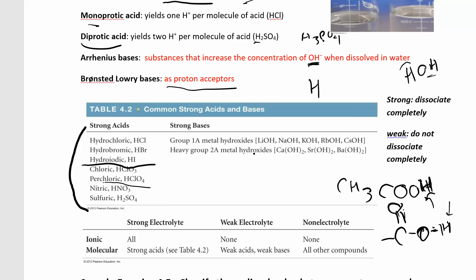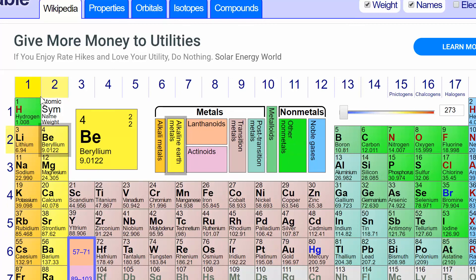Strong bases are all of the group one metal hydroxides. So lithium, sodium, potassium, rubidium, and the group one metal hydroxides. It's like all these guys with a hydroxide.